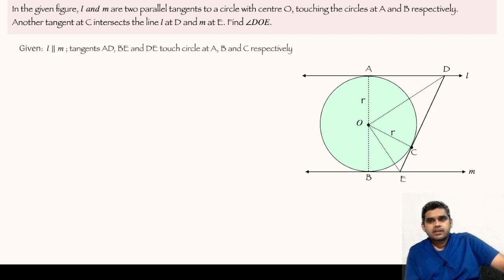First of all, we will write whatever information is given in the question. Lines L and M are parallel, AD, BE and DE are tangents to the circle, and we have to find the value of angle DOE.